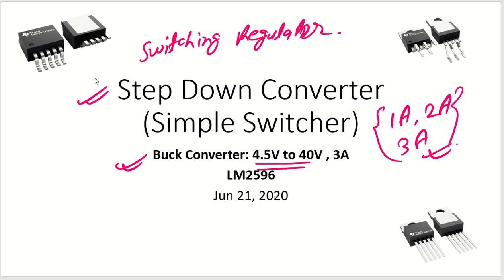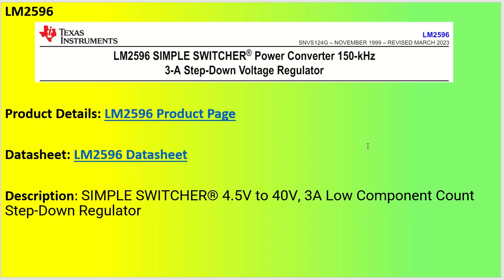This particular IC has three packages: one is TO-263, and two variants of TO-220 with slightly different pin configurations. The LM2596 is an IC from Texas Instruments and it has a 150 kHz switching frequency.